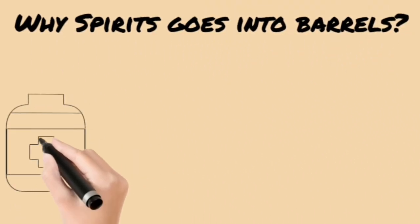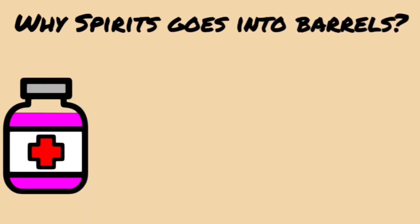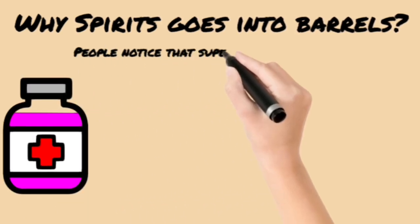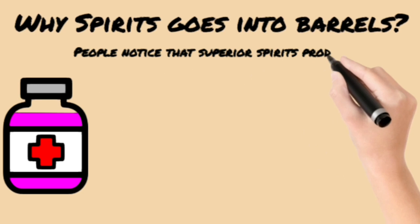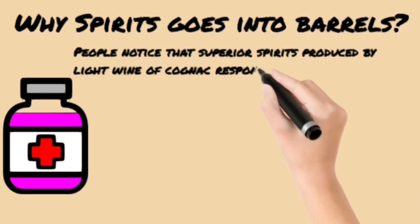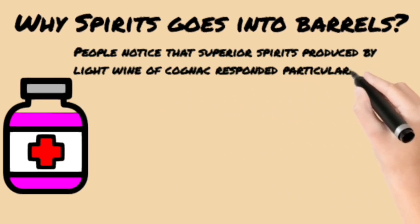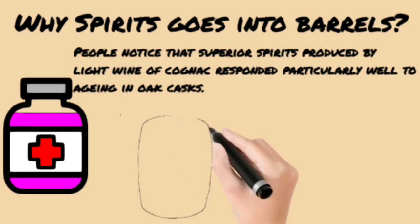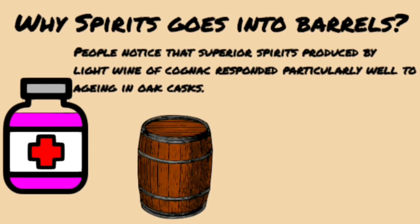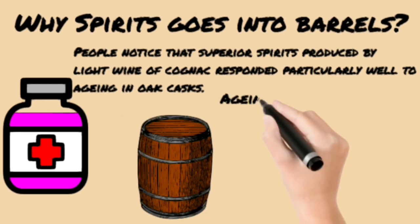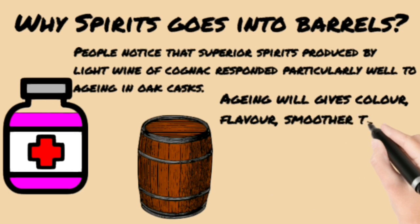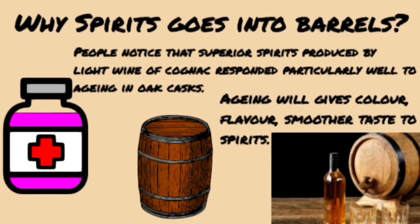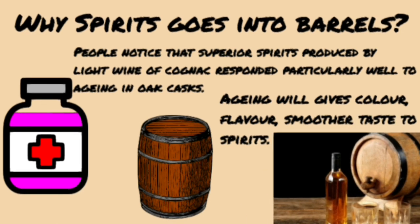Why do spirits go into barrels? Probably the first spirit was used purely as medicine. Ancient people noticed that superior spirits produced from the light wine of cognac responded particularly well to aging in oak casks. The casks are traditionally fashioned out of wood from forests, and aging gives color, flavor, and a smoother taste to spirits.